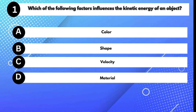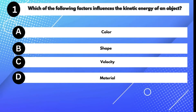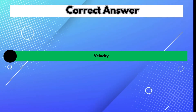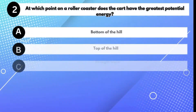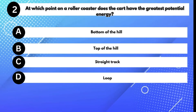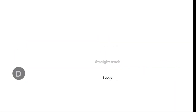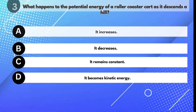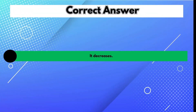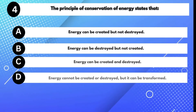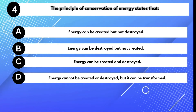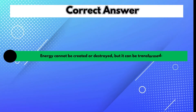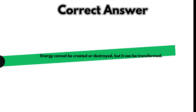Which of the following factors influences the kinetic energy of an object? Answer C: Velocity. At which point on a roller coaster does the cart have the greatest potential energy? Answer B: Top of the hill. What happens to the potential energy of a roller coaster cart as it descends a hill? Answer B: It decreases. The principle of conservation of energy states that Answer D: Energy cannot be created or destroyed, but it can be transformed.